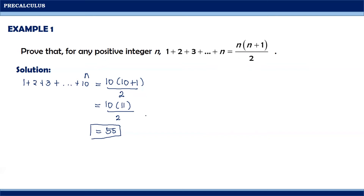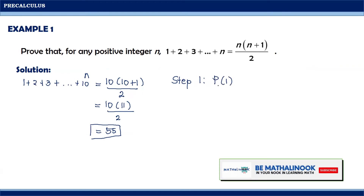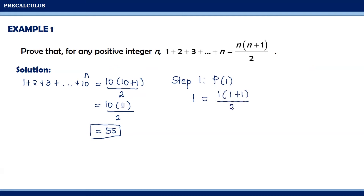To do that, we will be doing it step by step. For step 1, we need to determine if the mathematical statement is true for P of 1. P of 1 means we only have the first term, so it will become 1 is equal to 1 times 1 plus 1 all over 2. Simplifying this, we will have 1 equals 1 times 2 divided by 2, then 1 is equal to 2 divided by 2, and finally we have 1 is equal to 1. Notice that P of 1 is true. Since the first step is satisfied, we need to proceed to the next step.